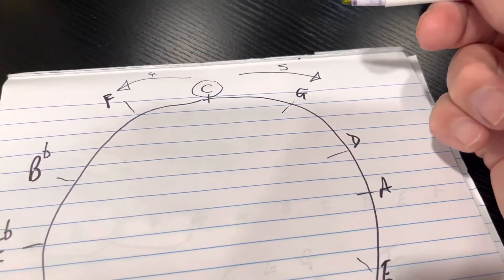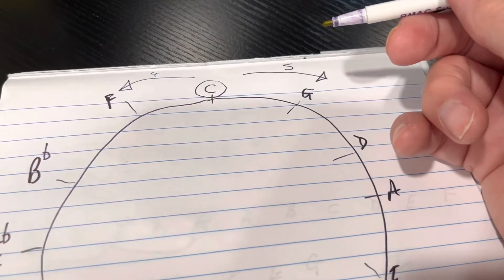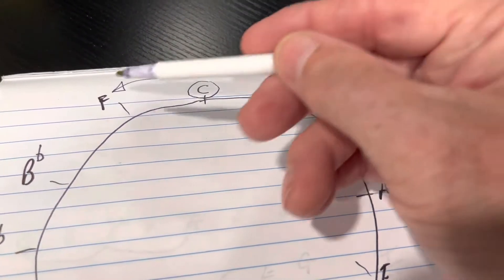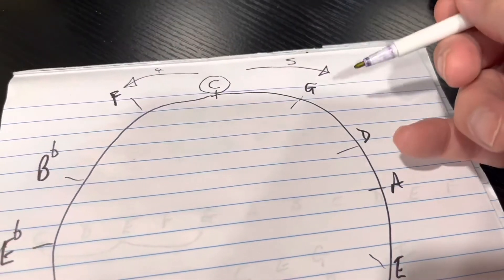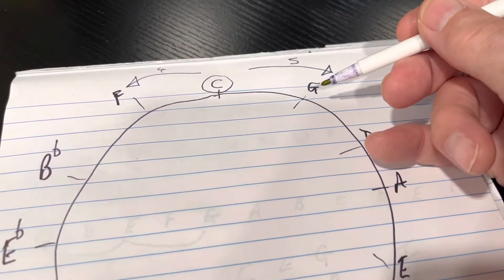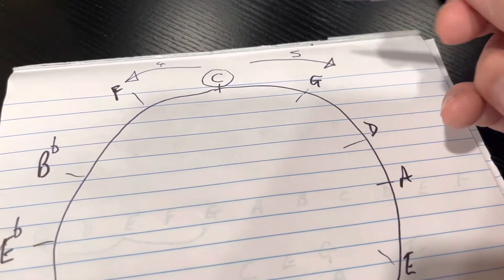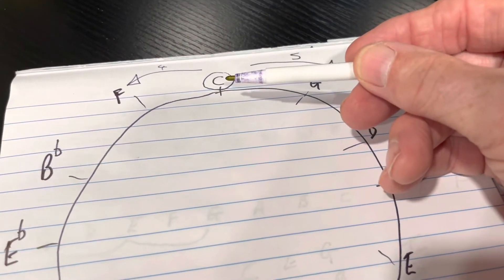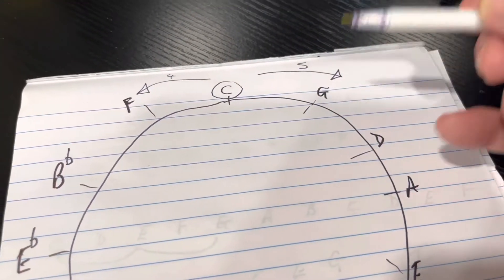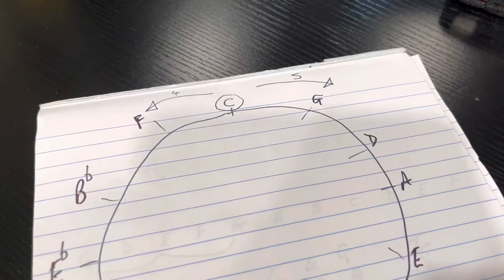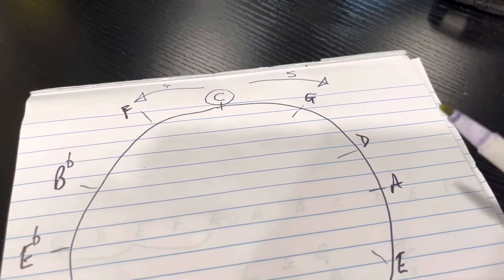We know in that key that chord number four is F major and chord number five is G major. And anywhere on the circle, if you look at one note and look at the chord on either side of it, those two chords are the major chords in that key, no matter what it might be.